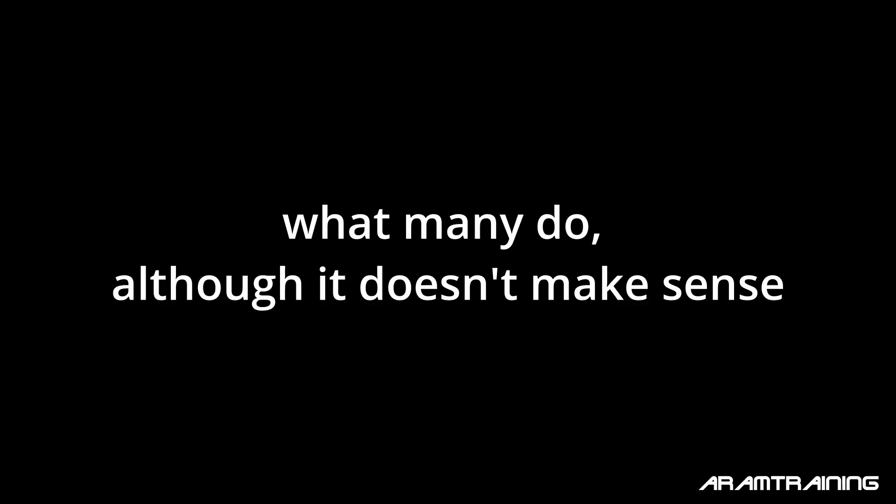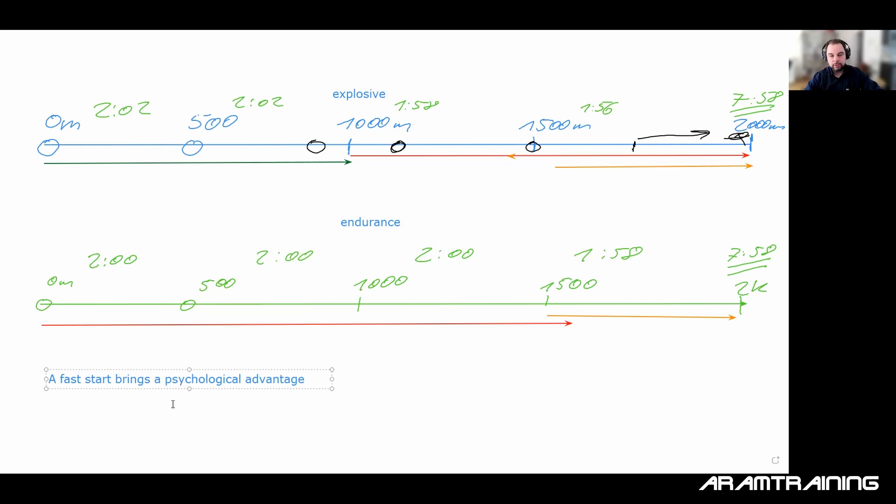So myth number one, a fast start brings a psychological advantage. No, that may be true for kids racing, but it's definitely not true at higher levels. If your motivation is so bad that if you're behind two boat lengths, you lose all your fighting spirit, it's not very likely you belong to the group of successful rowers in any age category. That's simply what the reality is like. You have to be able to fight no matter if you're 10 lengths behind or one length in the lead. It's always the same game.